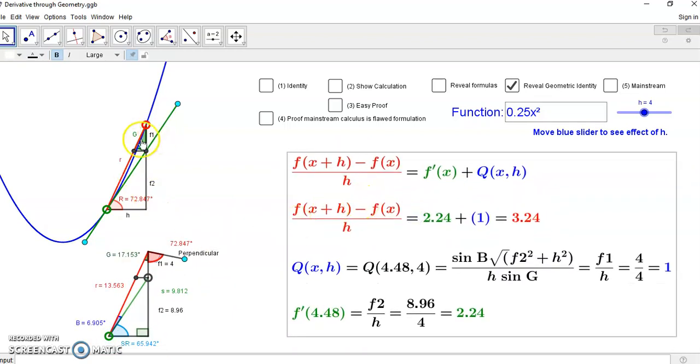This identity states that the slope of the non-parallel red secant line, which is non-parallel to the green tangent line, is equal to the slope of the green tangent line plus the difference in the slopes of the two.